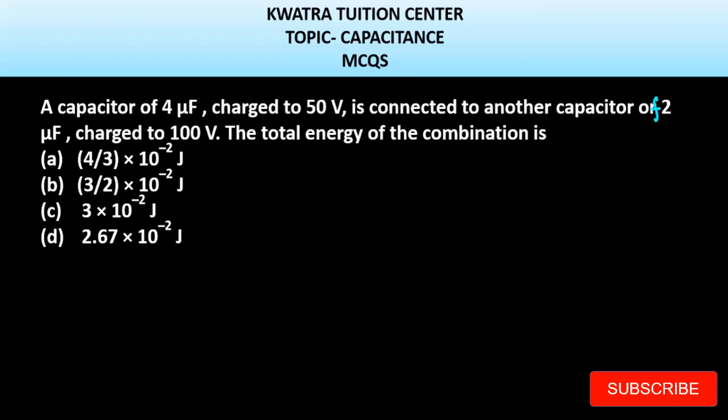One energy will be before joining and one energy will be after joining. Now we have to see how much of the total energy becomes after joining. Because we have to start before joining so that we can find the common potential and after the common potential we can find the total energy required. First of all, let's start with the total energy before joining.